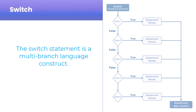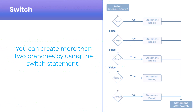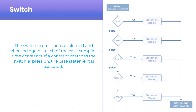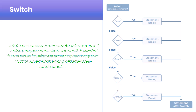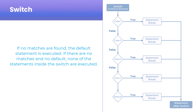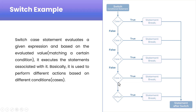The switch statement is a multi-branch language construct — you can create more than one branch, in contrast to the if statement where you have to nest statements to create the same effect. The switch expression is evaluated and checked against each case's compile-time constant. If it matches, the case executes. If a break is present, the program jumps out. Without a break it continues evaluating further cases. If no match is found, the default executes; if there's no default either, none of the statements inside the switch run.